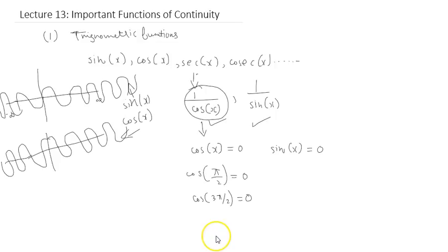We can observe a general pattern that's occurring over here. If you notice, the difference between pi and 3 pi is by 2, and the denominator remains the same. So the next value at which it's going to be 0 is cos 5 pi over 2.